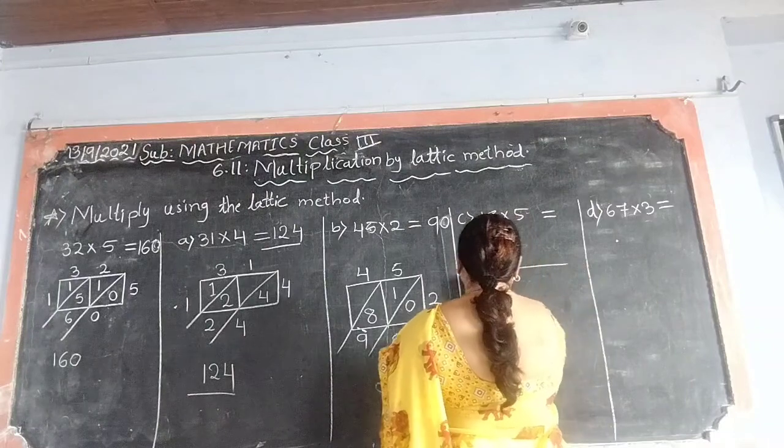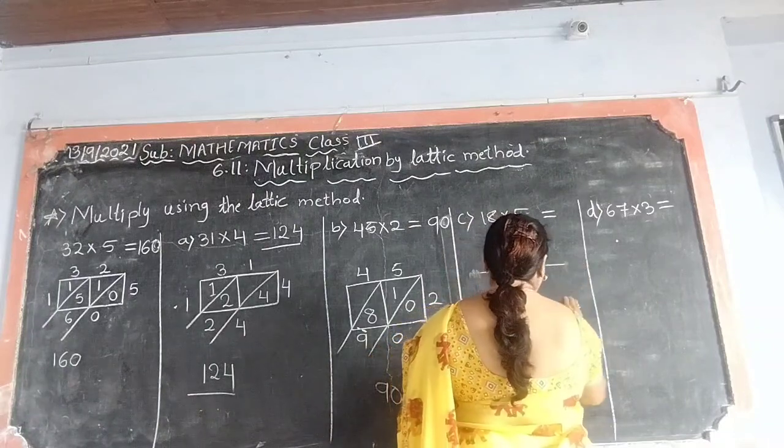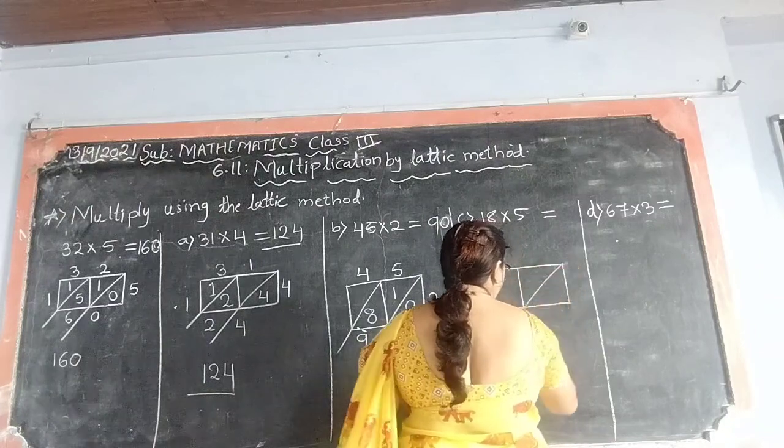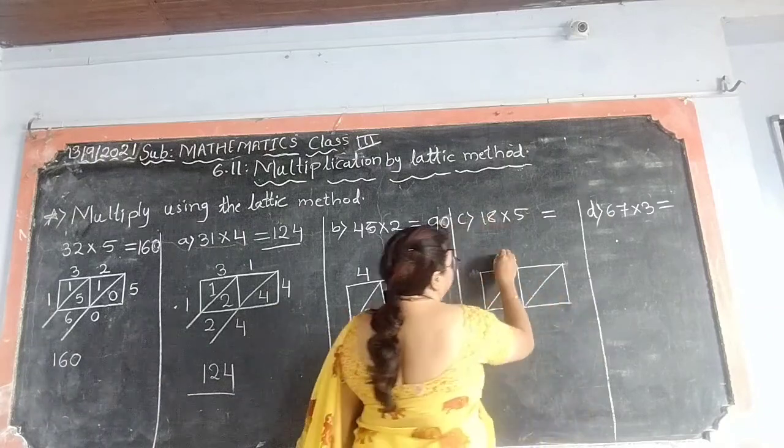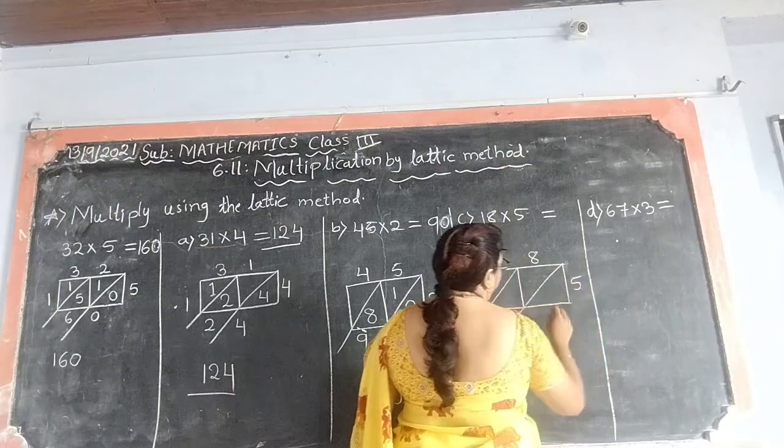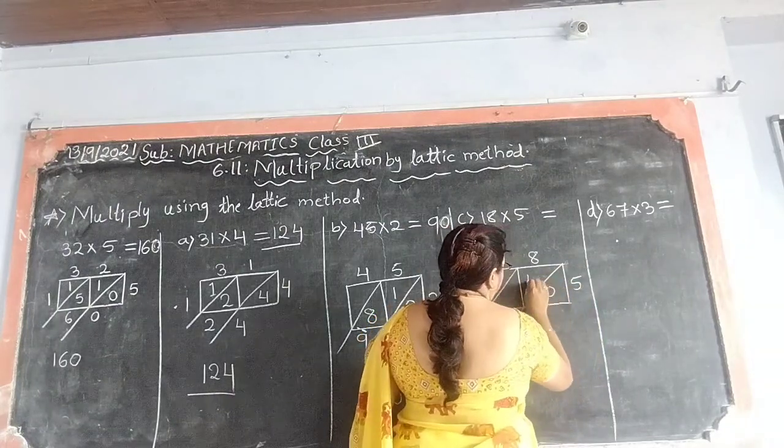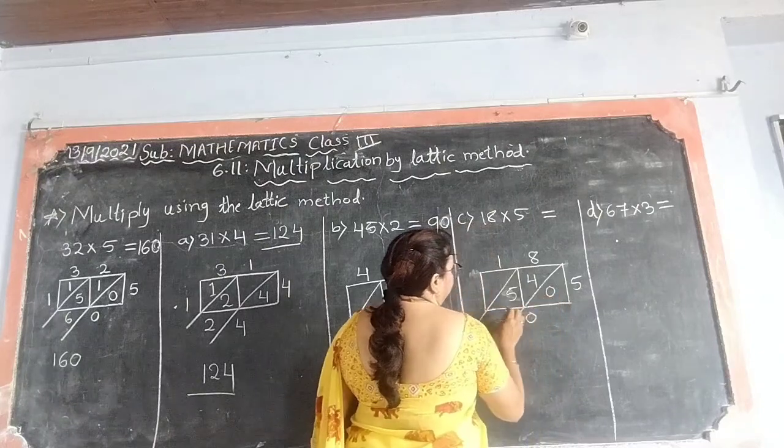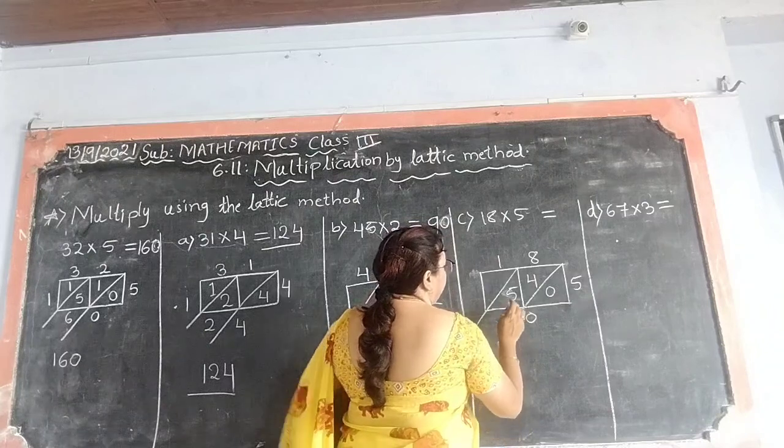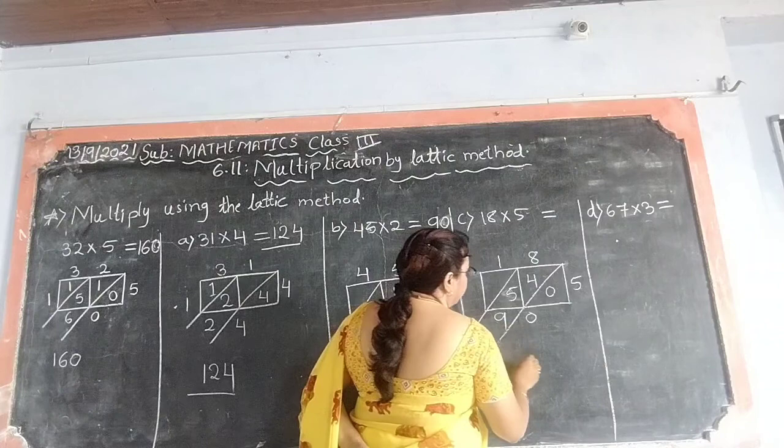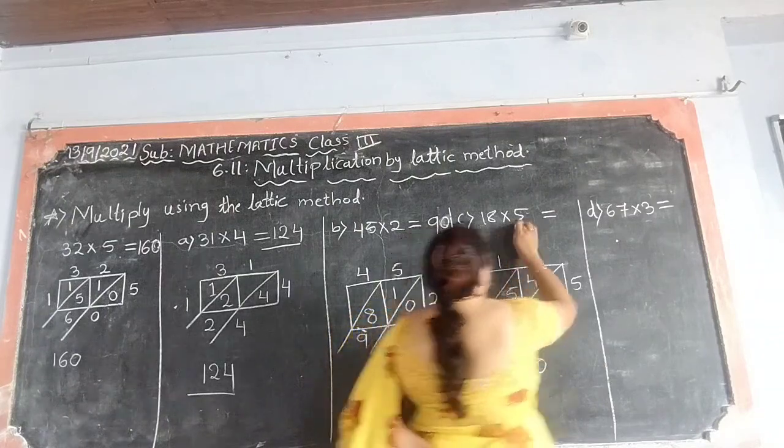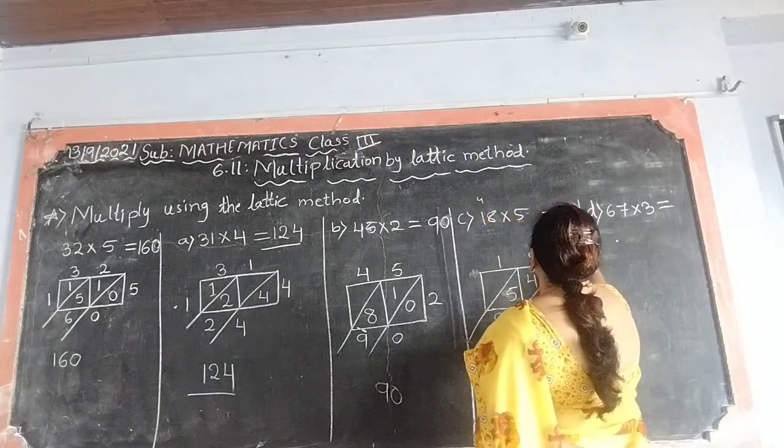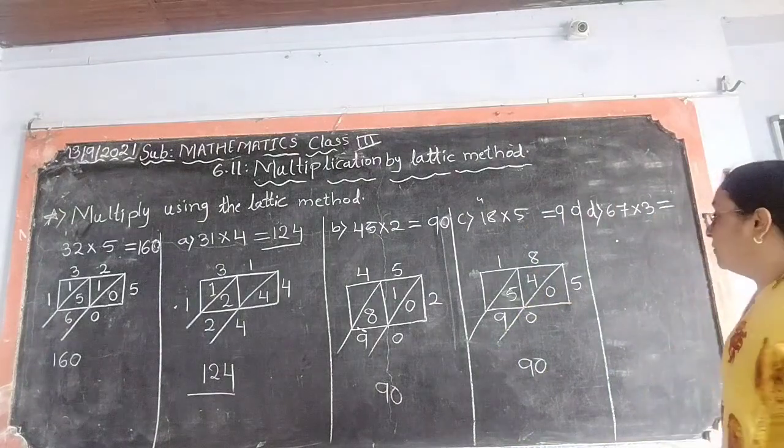Again, we will draw the box. See? Now, what is the multiplicand? 85. Multiplier, 5. 8 fives are 40. 5 ones are 5. So, what is the answer? 0, 5 plus 4 is 9. So, answer is 90. Product is 90. 8 fives are 40, 5 plus 4 is 9. I hope you are understanding. Very easy it is. Next.